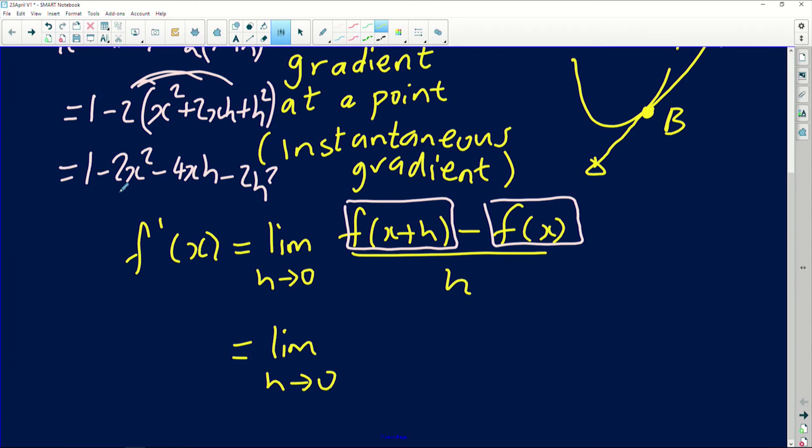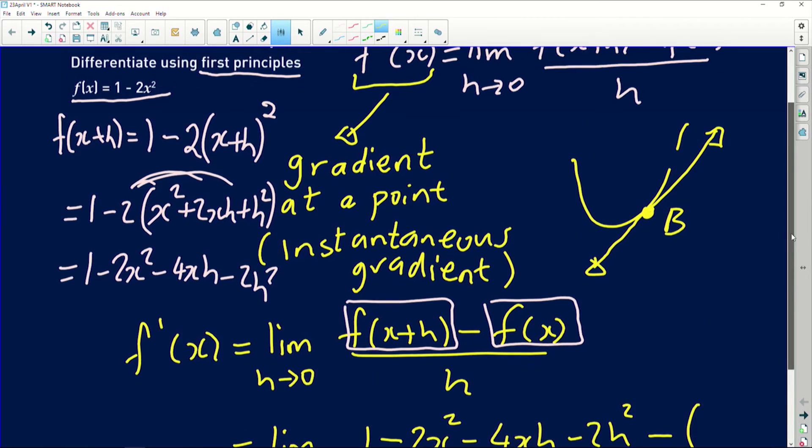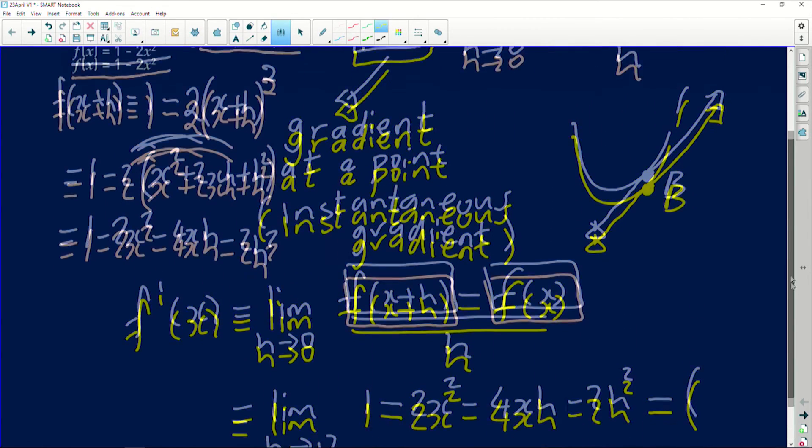My f of x plus h, I worked it out there. It is one minus two x squared minus four xh minus two h squared. There's a minus in the formula. And then my f of x. What is our f of x? It was given to us in a statement as one minus two x squared. So I'm going to write this further.